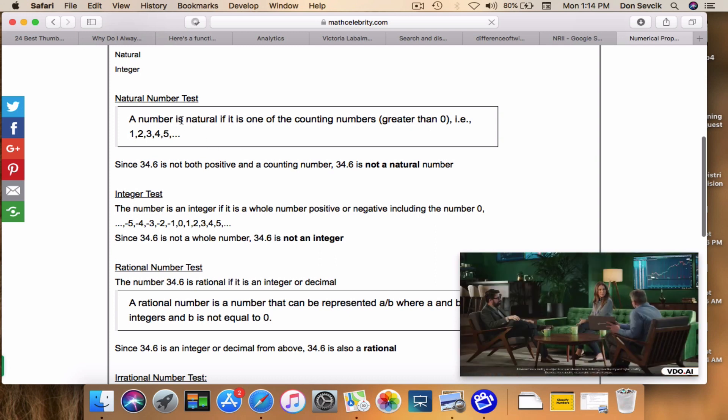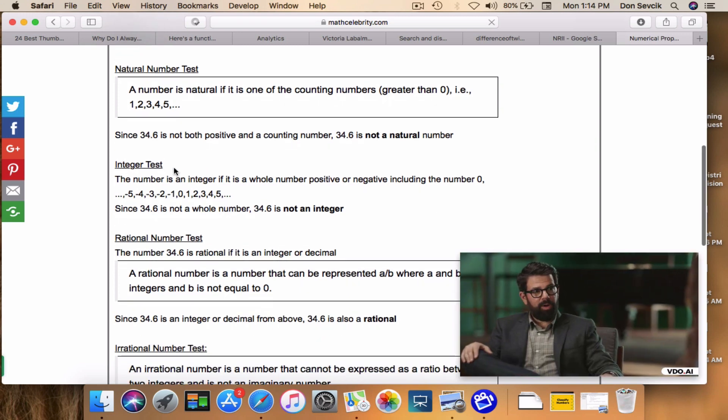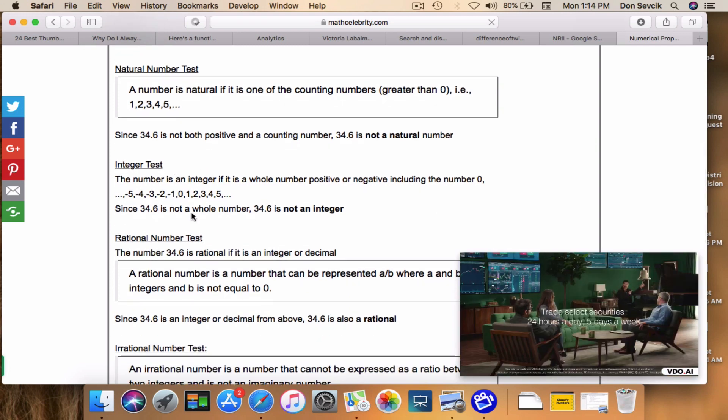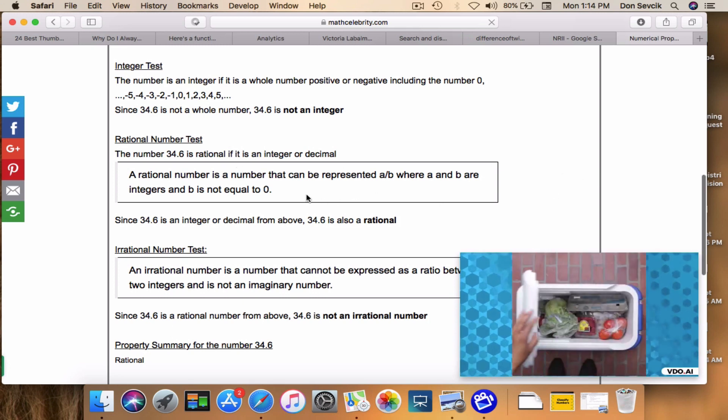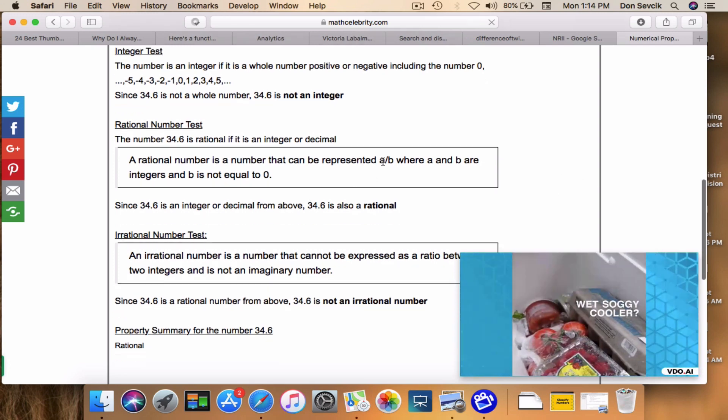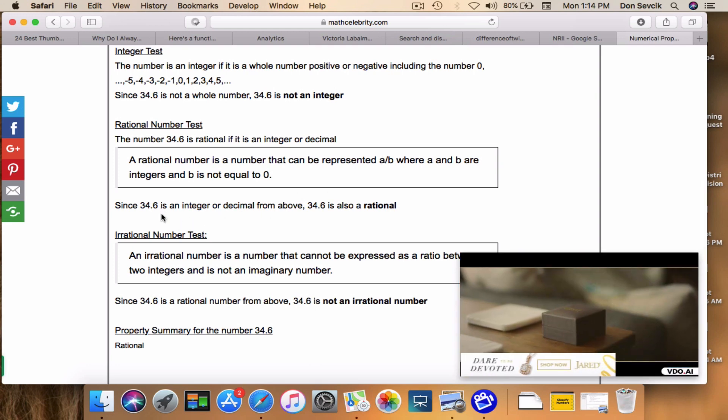It does the natural number test - that fails because it's a decimal. It's going to run the integer test - it fails because it's a decimal. Now we're at the rational number test. Because you can express this as a/b - let's say really this is 346 divided by 10 - that's one rational test. Then yes, this number is indeed rational.